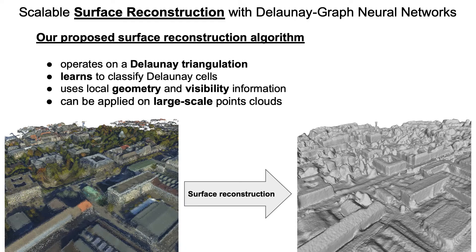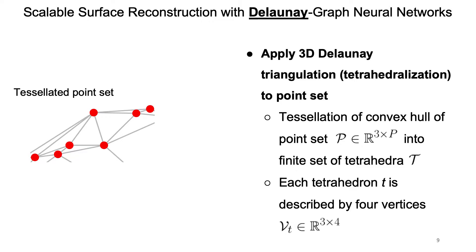To explain in more detail how our algorithm works, I am going to resort to a small toy example. As input we have a set of points in R3 and we apply a Delaunay triangulation to the point set. In 3D it is more accurate to call it tetrahedralization. The upside of Delaunay tetrahedralization compared to regular tessellations such as voxelization is that we gain a partition of space which is adaptive to the local point density.